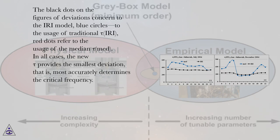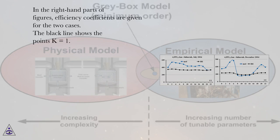The black dots on the figures of deviations concern the IRI model, blue circles to the usage of traditional tau IRI, red dots refer to the usage of the median tau MED. In all cases, the new tau provides the smallest deviation, that is, most accurately determines the critical frequency. In the right-hand parts of figures, efficiency coefficients are given for the two cases. The black line shows the points k equals 1.